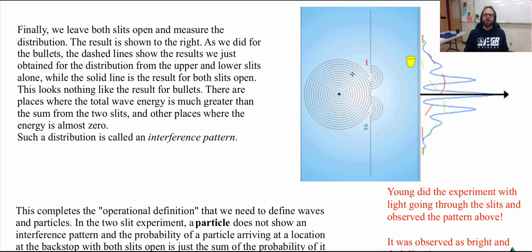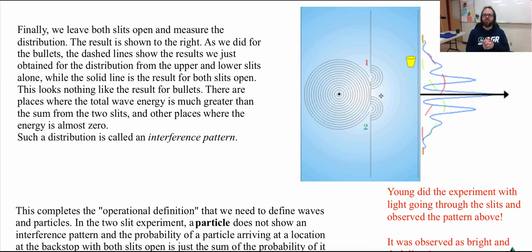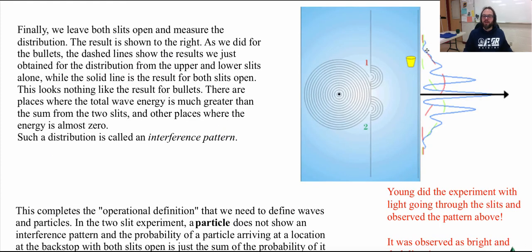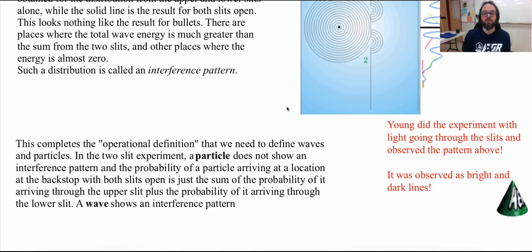But when both slits are open, we get something very, very intriguing — something called an interference pattern. The waves interfere with each other. It doesn't turn out like the machine gun with bullets. The two bell curves don't just build on each other. At some points they interact positively — constructive interference — and sometimes there is destructive interference. We end up getting a graph with alternating destructive and constructive interference, then huge constructive and huge destructive interference.